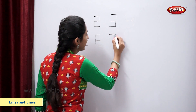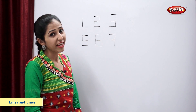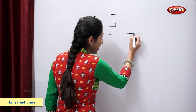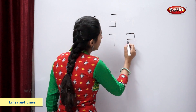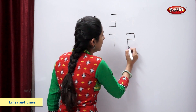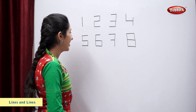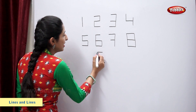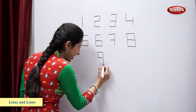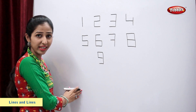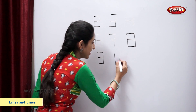Sleeping line, standing line, sleeping line. Number seven. Sleeping line, standing line, standing line, sleeping line, standing line, sleeping line. Number eight. Sleeping line, standing line, sleeping line, standing line, a sleeping line. Number nine.